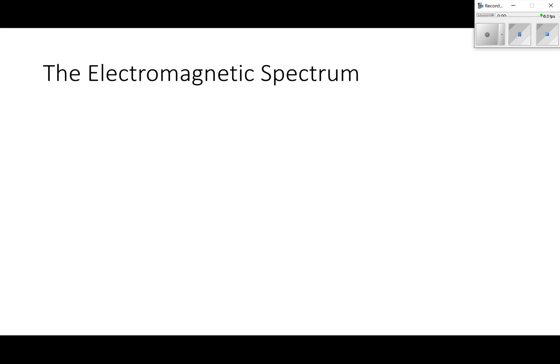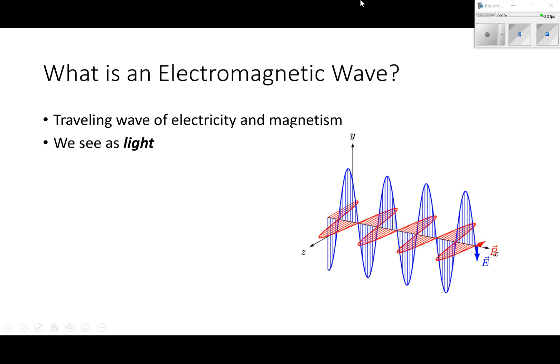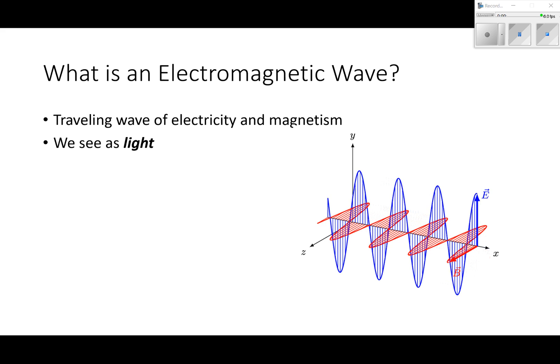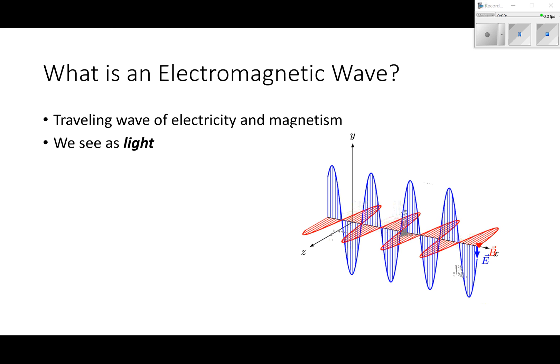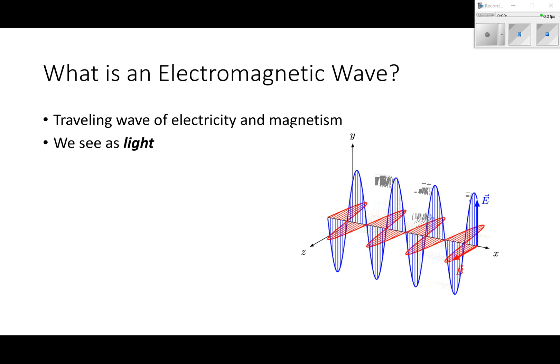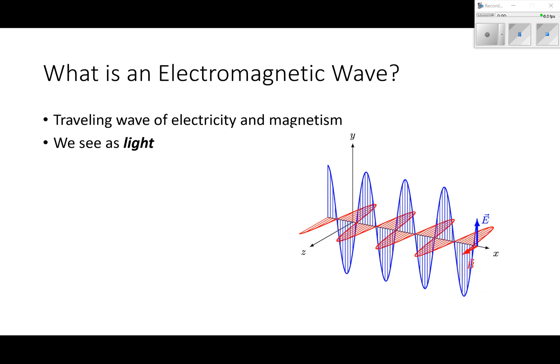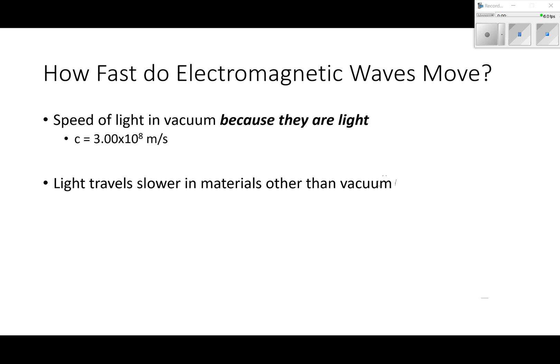The electromagnetic spectrum. First of all, what is an electromagnetic wave? It's literally exactly what it sounds like - it's a traveling wave of electricity and magnetism, electromagnetism. We see electromagnetic waves as light.